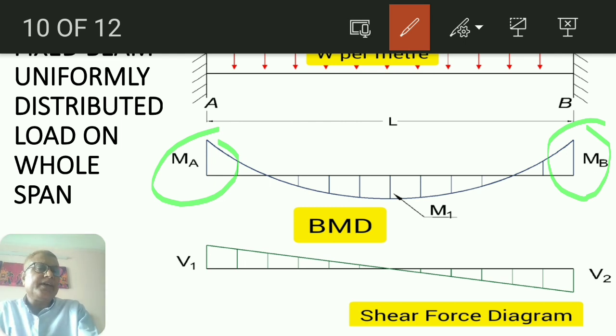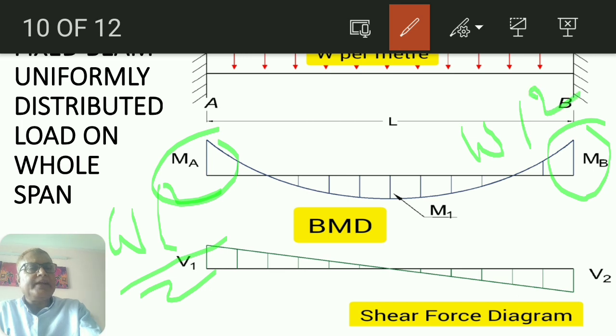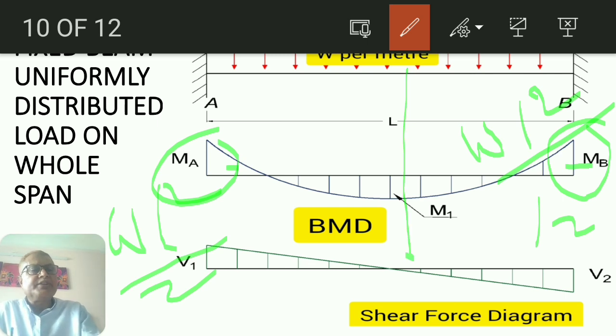And its value is WL square by 12. At the other end also WL square by 12, and this will be negative. At the center, mid of the span, its value is WL square by 24.